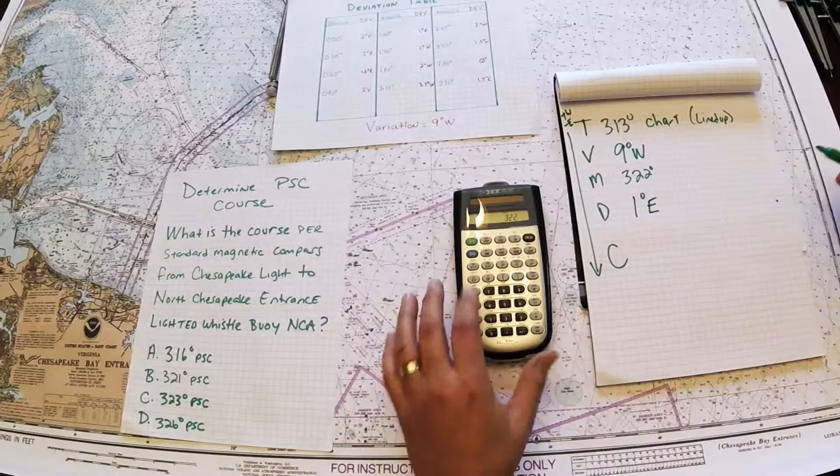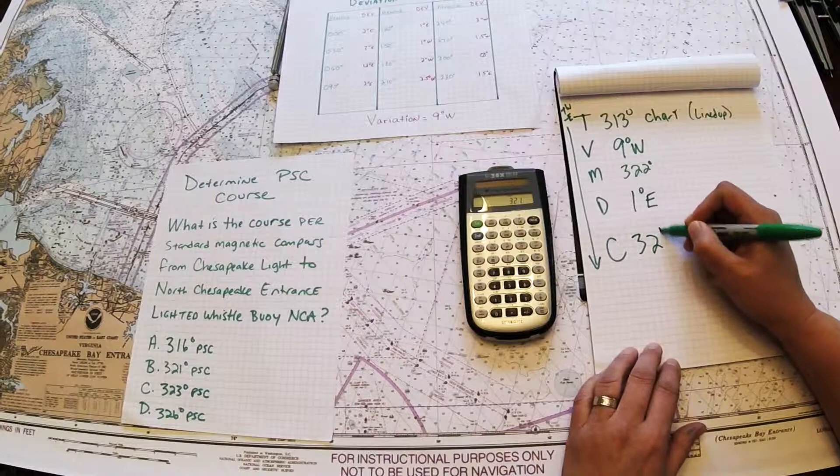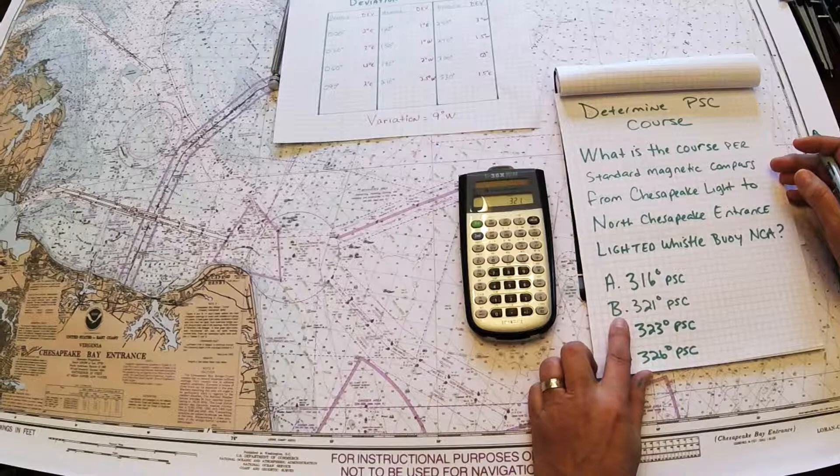When I'm going down the problem, I follow the arrow with the same rule. 322 already in my calculator, minus 1 gives us 321 degrees PSC per standard compass. So when I look at my problem here, I would go ahead and choose B, which is 321 PSC, which is the correct answer.